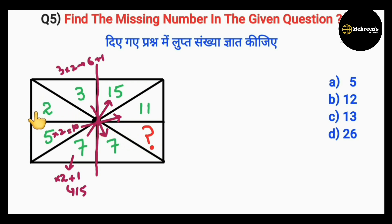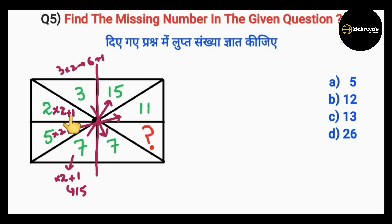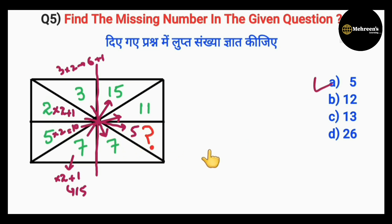The opposite of 2 is 5, which is our missing number. So option A is the correct one.